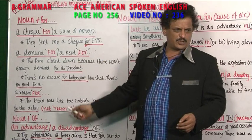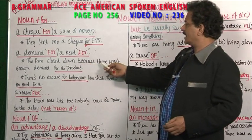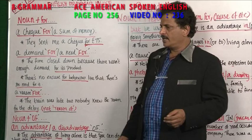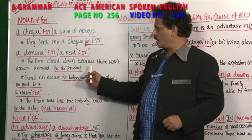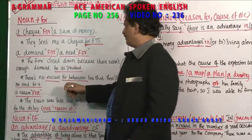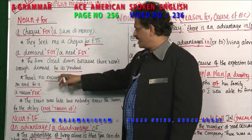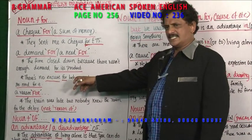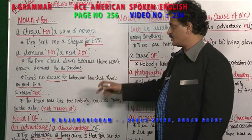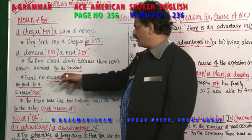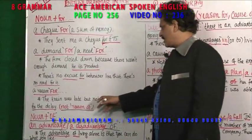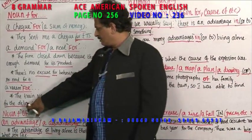A need for. A demand for means what people wanted. The firm closed down — there wasn't enough demand for its products. Demand for its products means people are not asking. So there is no excuse — excuse is a noun. There is no excuse for behavior like that. There is no need for that. Excuse for — no need. A reason for — reason is a noun, for is a preposition. The train was late but nobody knew the reason for the delay. Reason for.